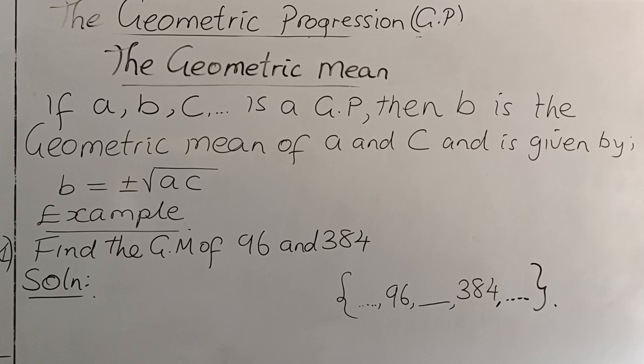Now we are getting the geometric mean. We are told that if a, b, c,... is a GP, then b is the geometric mean of a and c and is given by b = ±√ac. Example: find the geometric mean of 96 and 384.